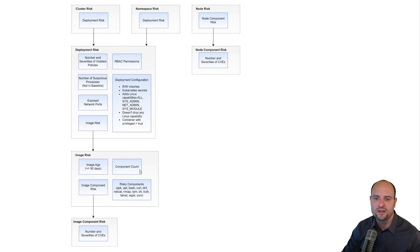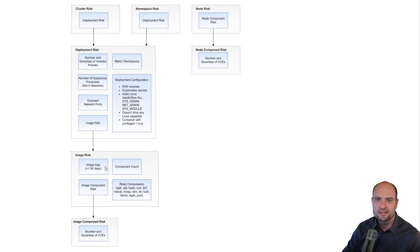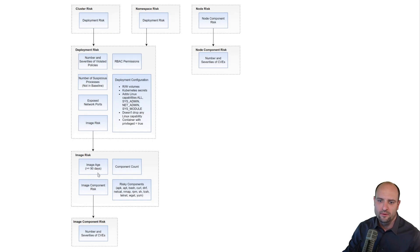Finally, the age of the image also affects the image risk score. The age of the image is determined by the creation timestamp that is part of the image metadata. Red Hat ACS assigns additional risk to images that are 90 days old or older, and this risk increases with every day beyond this 90-day mark.